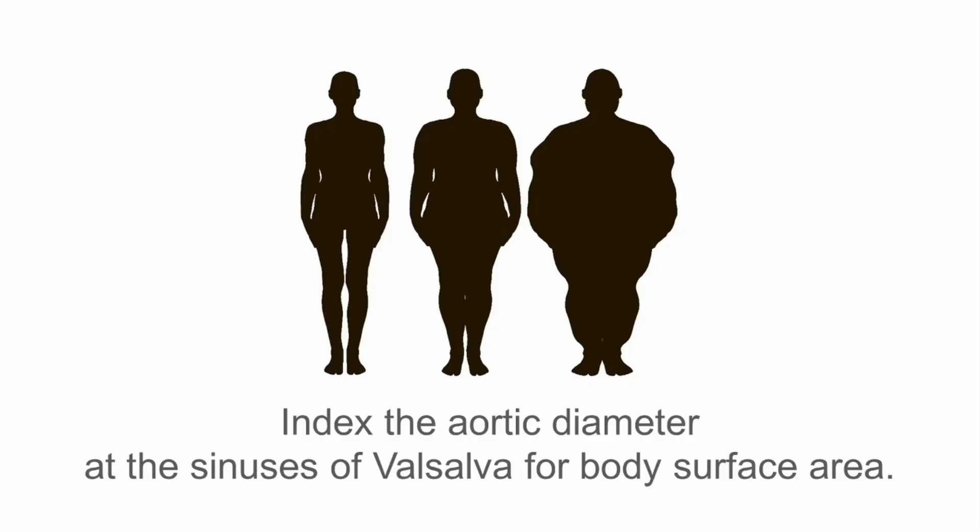Aortic diameters do vary according to the patient's body size, and so it's recommended that the aortic diameter at the sinuses of Valsalva should be indexed for body surface area. The normal range for the indexed measurement is 1.8 plus or minus 0.2 centimetres per metre squared.